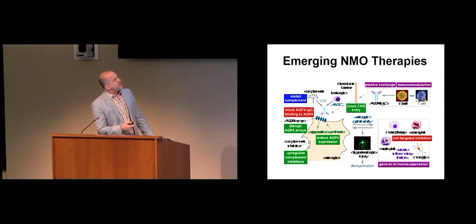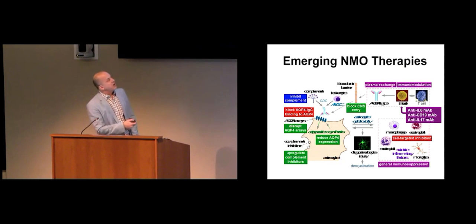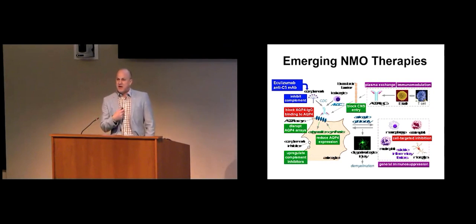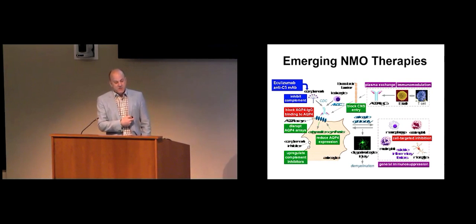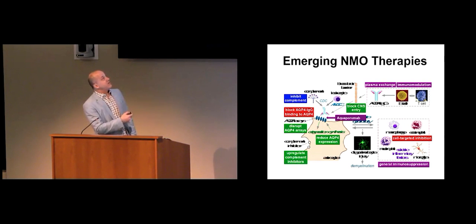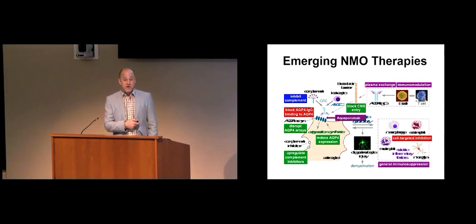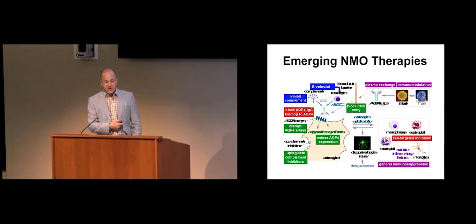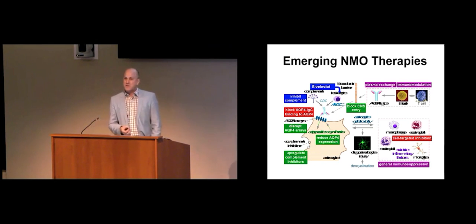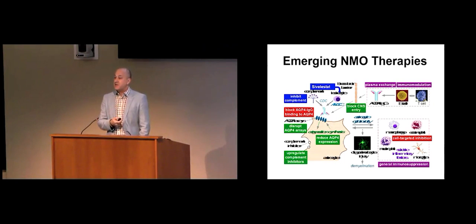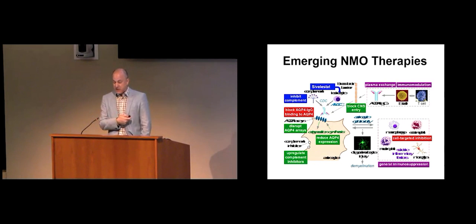With neuromyelitis optica, we're developing many new therapies based on our understanding of the disorder. Therapies are being designed to target the cells producing inflammation, and we appreciate that complement and antibodies activate a specific arm of the immune system — important for other TM entities and never tried before. We can specifically inhibit the aquaporin-4 antibody as a mode of therapy. Understanding the direct cause can lead to very specific non-immunosuppressive therapies, including agents that affect granulocytes that may be leaking their contents and damaging other cells.